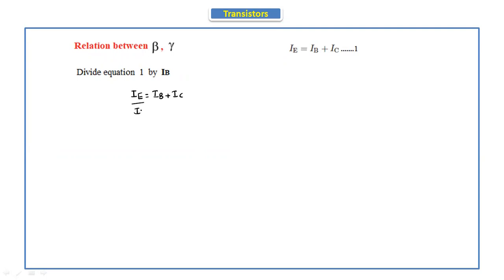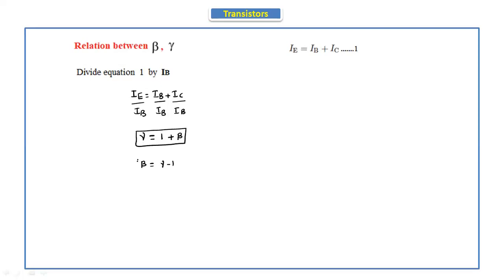Dividing equation one by IB gives: IE by IB equals IB by IB plus IC by IB. IE by IB is gamma, IB by IB is 1, and IC by IB is beta. So gamma equals 1 plus beta. This is the formula for gamma in terms of beta. Written in terms of beta: beta equals gamma minus 1.